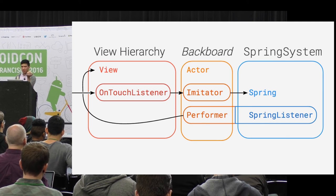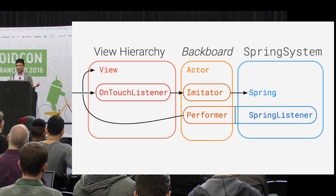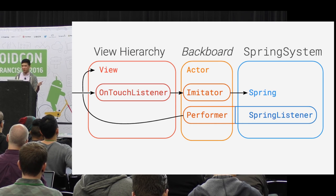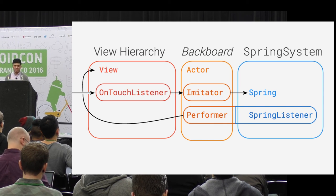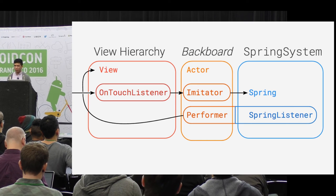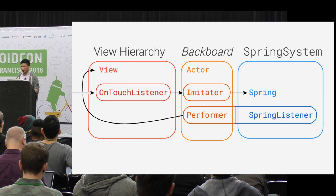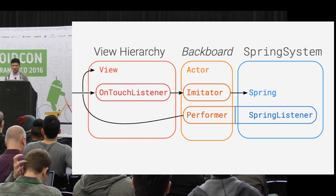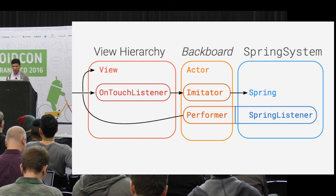There's another thing called an Actor which tries to tie the imitator and performer concepts together. When you know about both sides of the animation, it hooks up the components. You know you have a gesture and want to take user input and map it directly to a view. We're focusing on making things like chat heads where you're moving the same view you're touching.